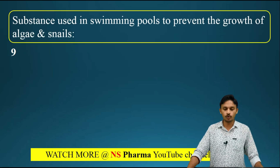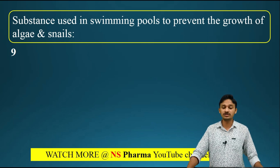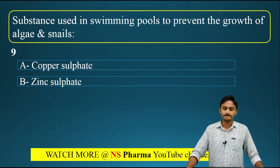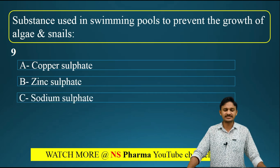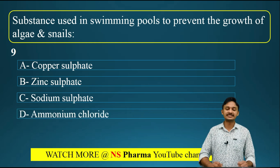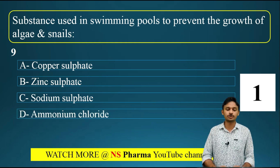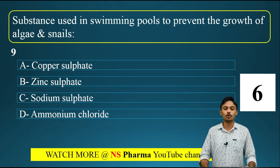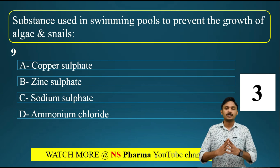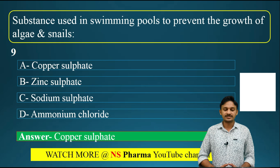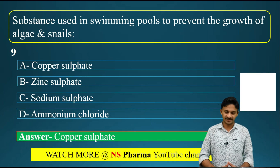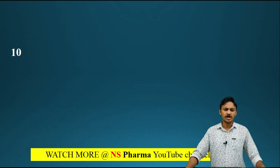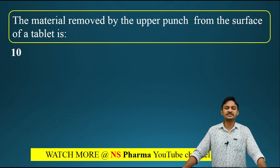Question number nine: the substance used in swimming pools to prevent the growth of algae and snails is? Options are: option A - copper sulfate, option B - zinc sulfate, option C - sodium sulfate, option D - ammonium chloride. The correct answer is option A - copper sulfate. Copper sulfate is used in swimming pools to prevent the growth of algae and snails.